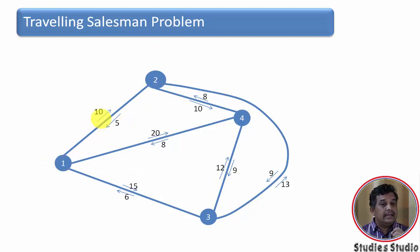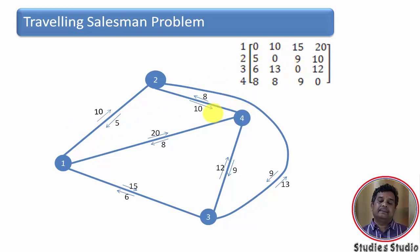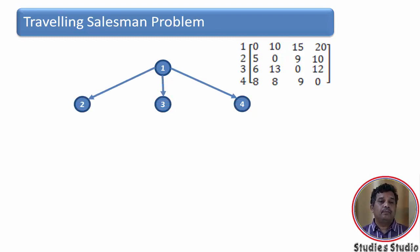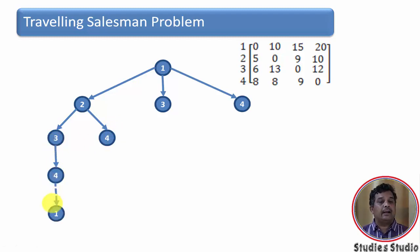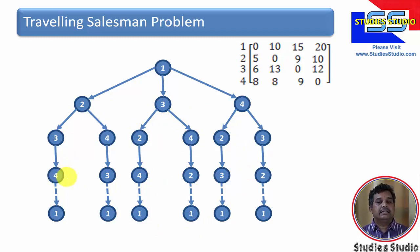Whenever there is an edge with a cost associated, I'll write the cost in the i,j-th location, and if there is no direct edge between two cities I'll write infinity. For example, from city 1 to city 2 the cost is 10, but from city 2 to city 1 the cost is 5. Now instead of cities we will use vertices, and we assume the salesman starts from vertex 1. Basically we are trying a brute force approach first.